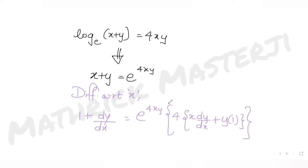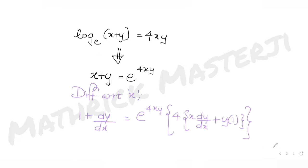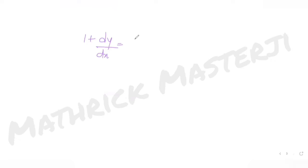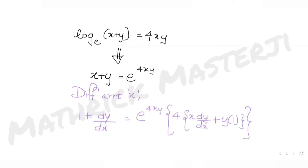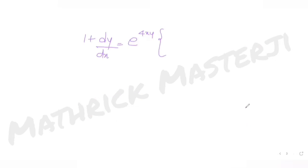So we have: 1 + dy/dx = e^(4xy) · (4x·(dy/dx) + 4y).